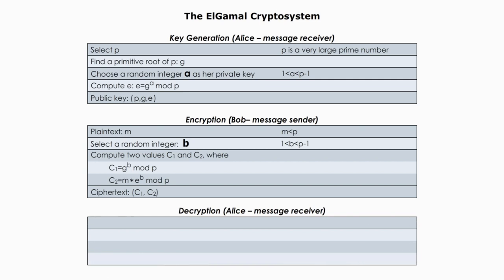Step 3: When Alice receives ciphertext (c1, c2), she uses her private key a to decrypt it using two formulas. First, compute x equals c1 to the power of a, modulo p. Then plug x into the second formula: m equals c2 times x to the power of (p minus 2), modulo p. This gives her the plaintext m. That completes the Elgamal process.